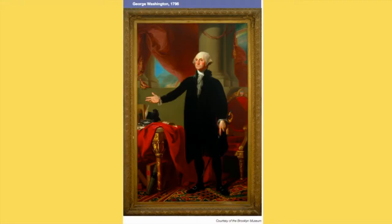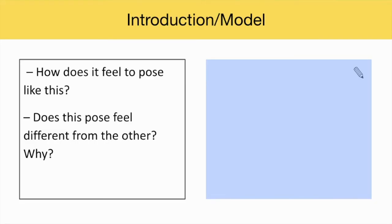Then show students the portrait of George Washington by Gilbert Stuart on this slide. Explain that this portrait was painted 20 years after the last one they looked at. Ask them again to stand and strike the same pose as George Washington. Follow up by asking: how does it feel to pose like this? Does this pose feel different from the other? Why?